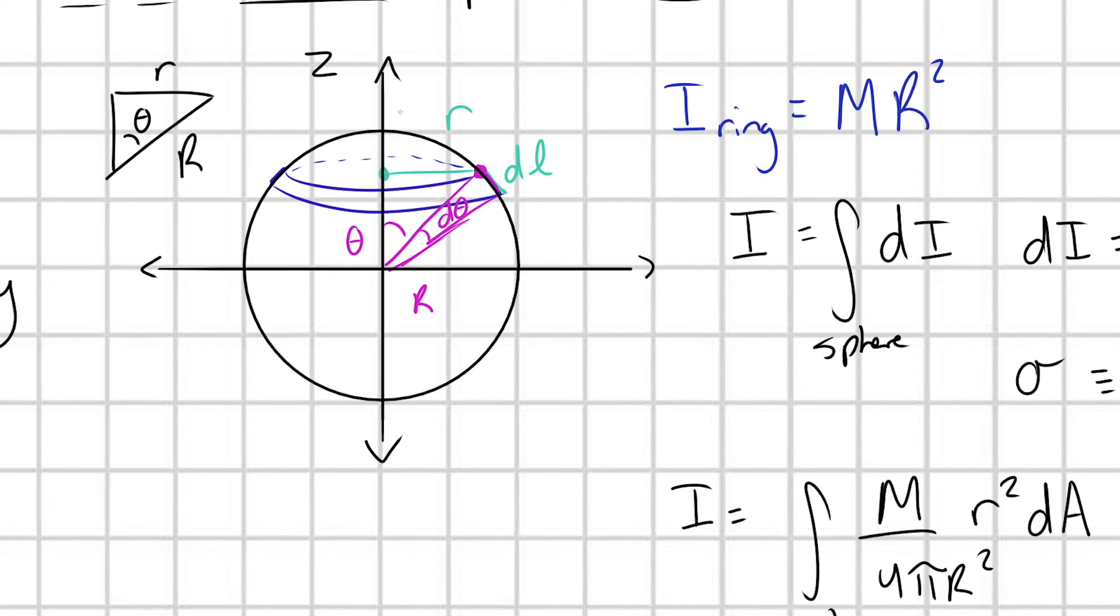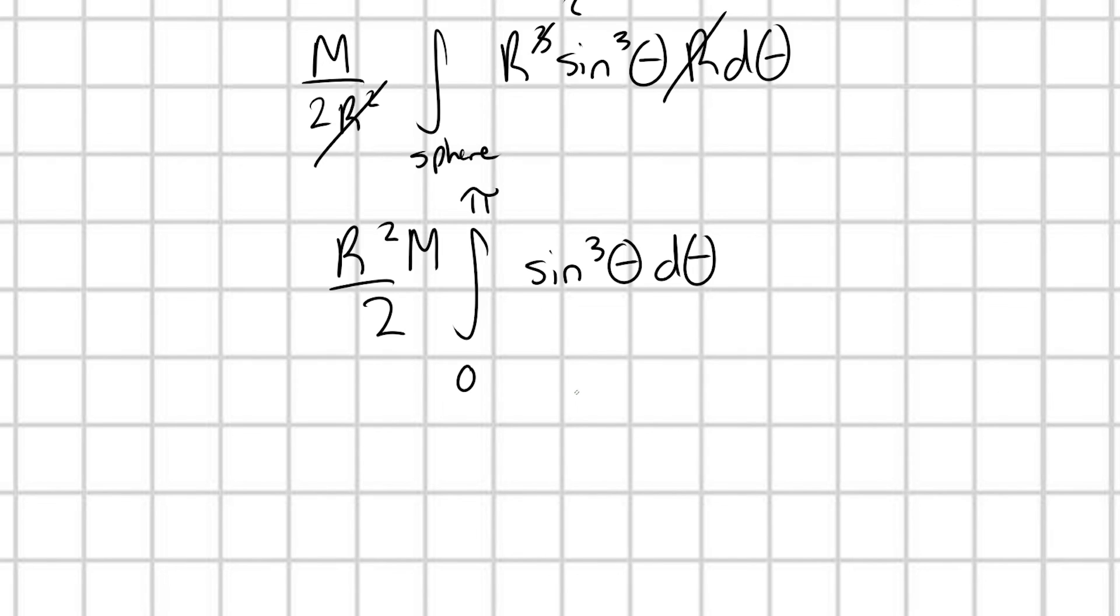Okay, so theta is going to start, this is theta equals 0. And we're going to sweep out, along our sphere, pi radians. We sweep out over our sphere pi radians, because at each of these angles, we draw out a full ring. So we only need to go just half of the sphere with our angle theta. Do you see that very clearly?